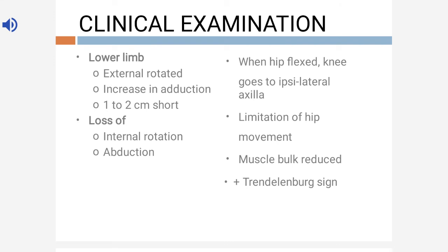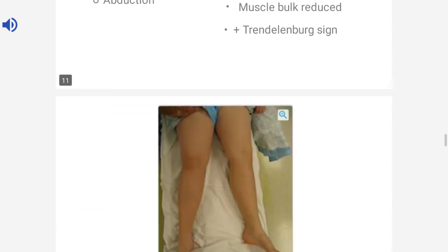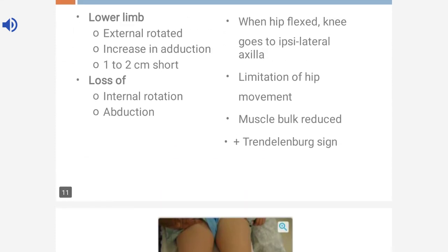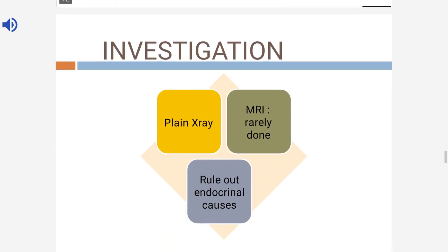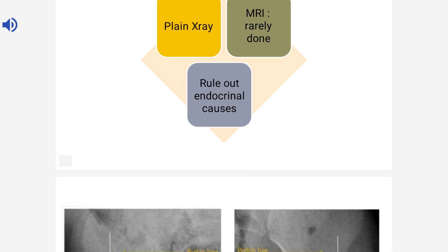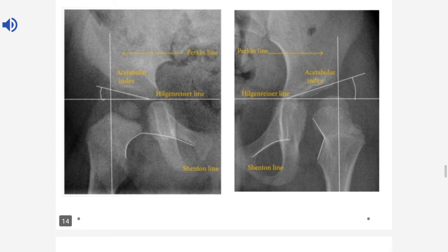Muscle bulk is reduced — muscle atrophy will be present — and Rentoul's sign will be positive. On examination you can see the affected leg is turned outward with external rotation, shortening, and loss of internal rotation and abduction. For investigations, get a plain X-ray of both hips in AP and lateral views — X-ray is usually sufficient. Rarely, MRI of both hips is done. Always investigate for endocrine causes like thyroid function and testosterone for hypogonadism.